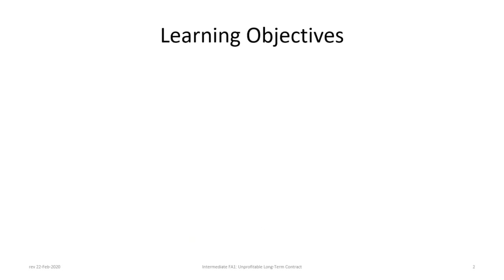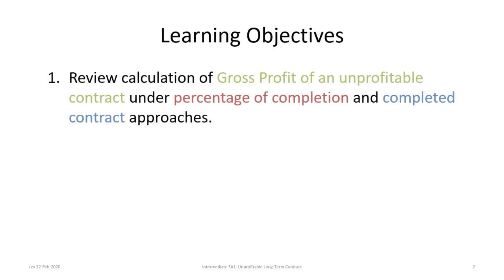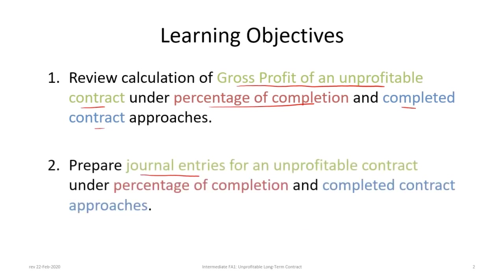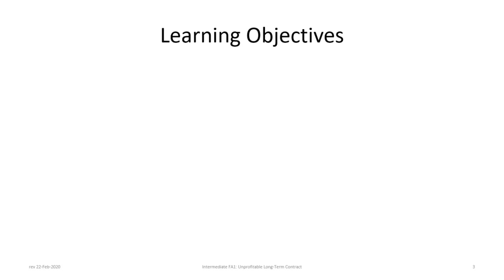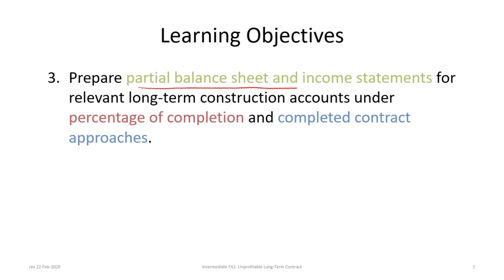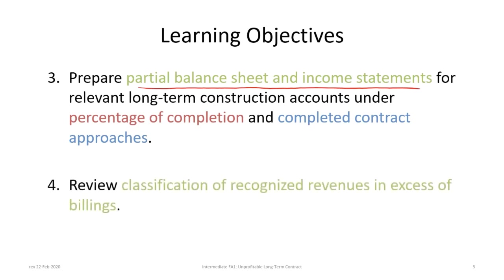There are four learning objectives for this tutorial. First, to review the calculation of gross profit of an unprofitable contract under the percentage of completion and completed contract approaches. Second, to prepare journal entries for an unprofitable contract under both approaches. Third, to prepare partial balance sheet and income statements for the relevant long-term construction accounts. And fourth, to review the classification of recognized revenues in excess of billings — something new not seen in previous tutorials.